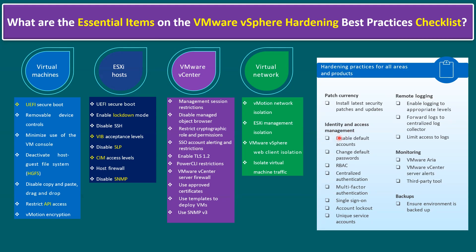Identity and access management — same as ESXi level access, vCenter access, VM level access, and guest OS level access. We can create service accounts at the vCenter level, virtual machine level, and guest OS level. Disable default accounts — like the administrator account within the Windows operating system. Change default passwords, and always maintain complex passwords. And role-based access controls. And centralized authentication, multi-factor authentication, and single sign-on.